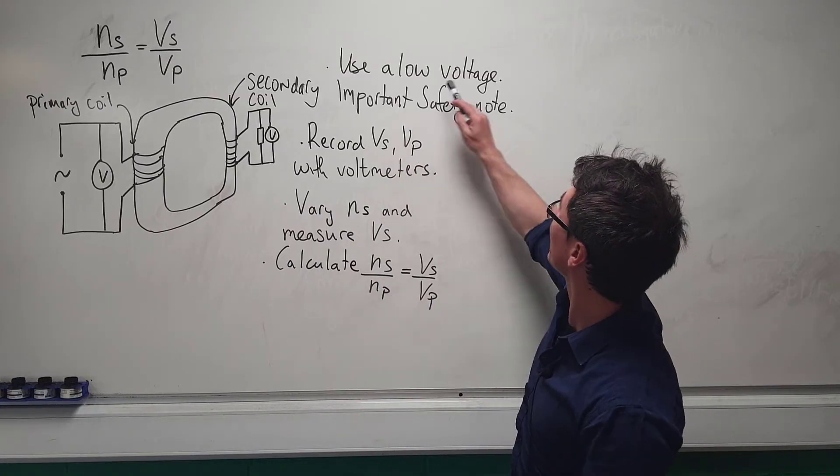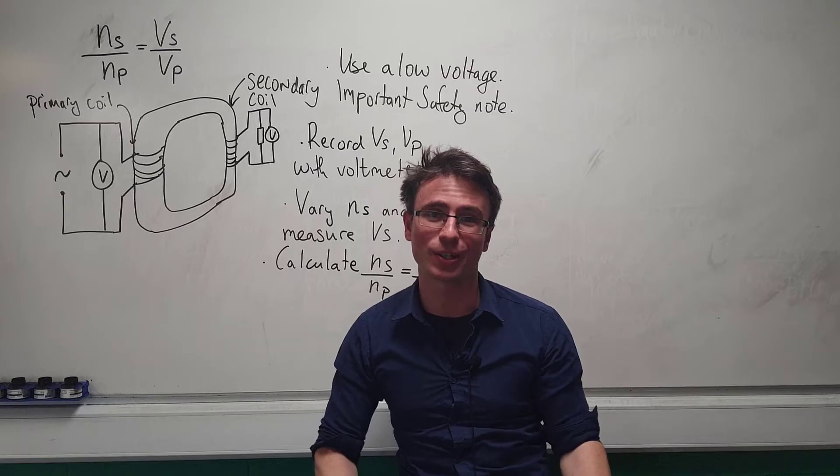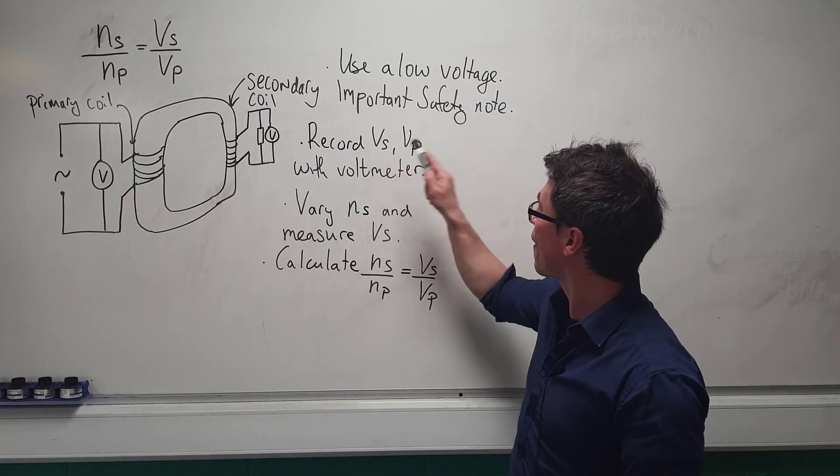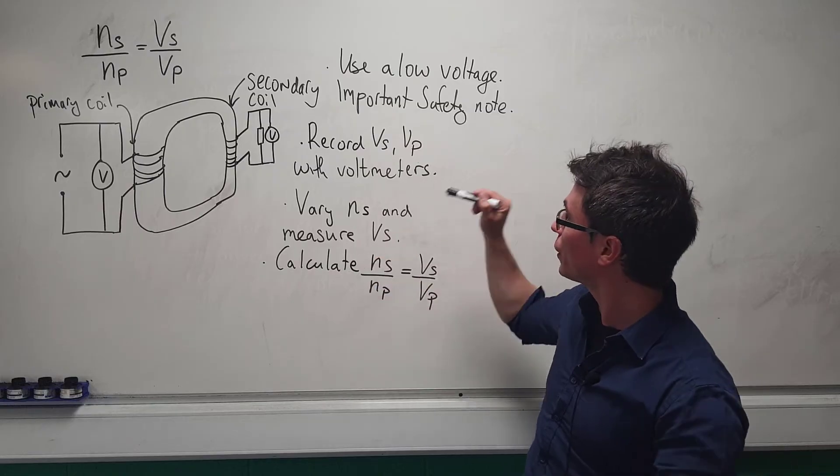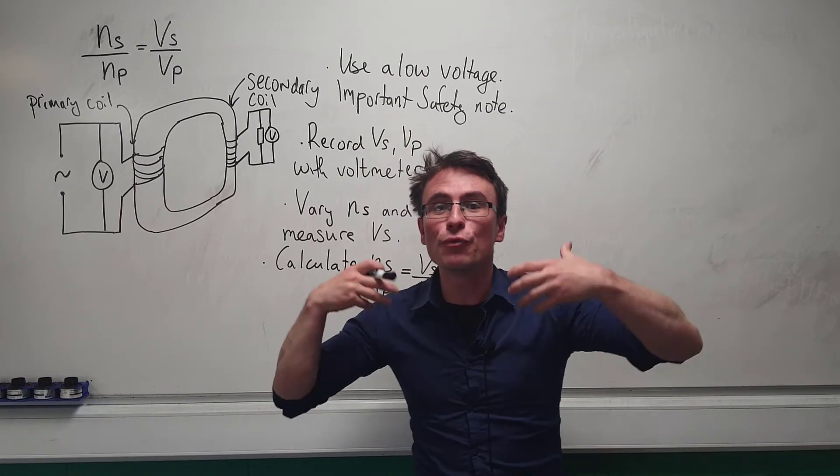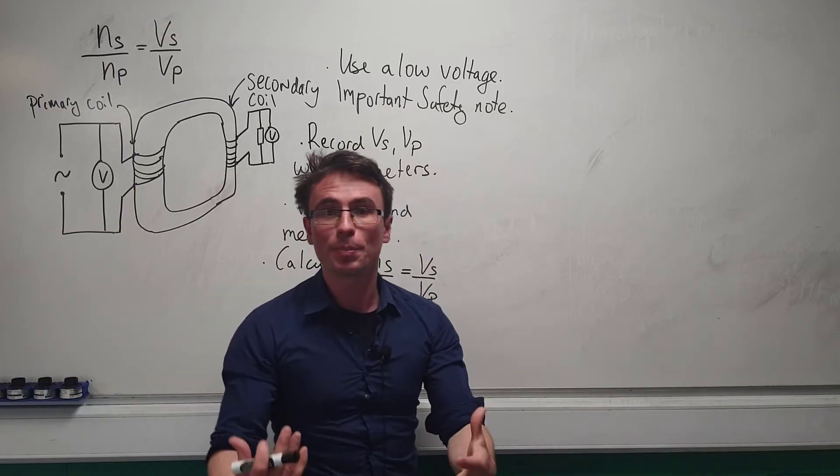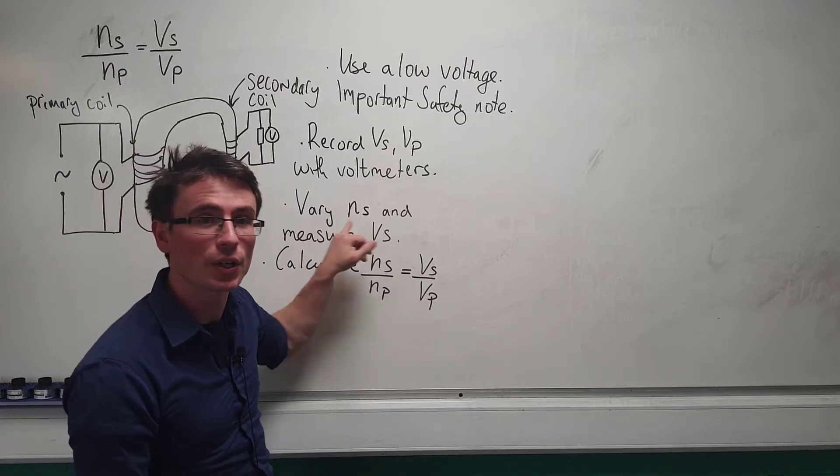Now to investigate this equation, we use a low voltage, which is an important safety consideration. Typically we record values of the primary and secondary voltage with voltmeters or multimeters, and we tend to vary a quantity. This could be different in different questions, but for instance, you could vary the number of secondary turns.